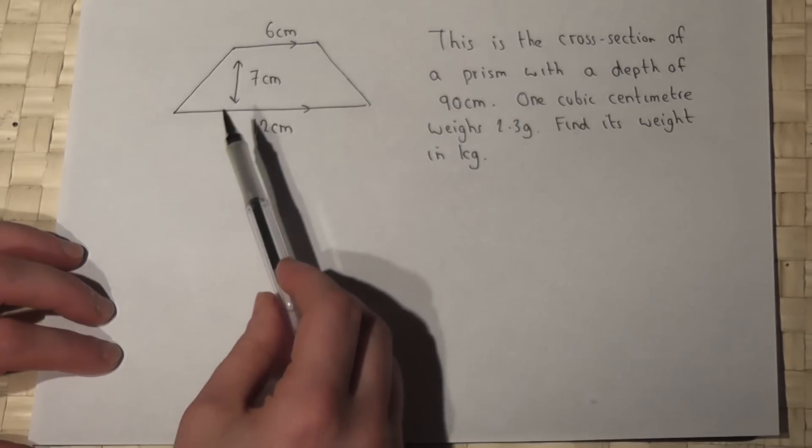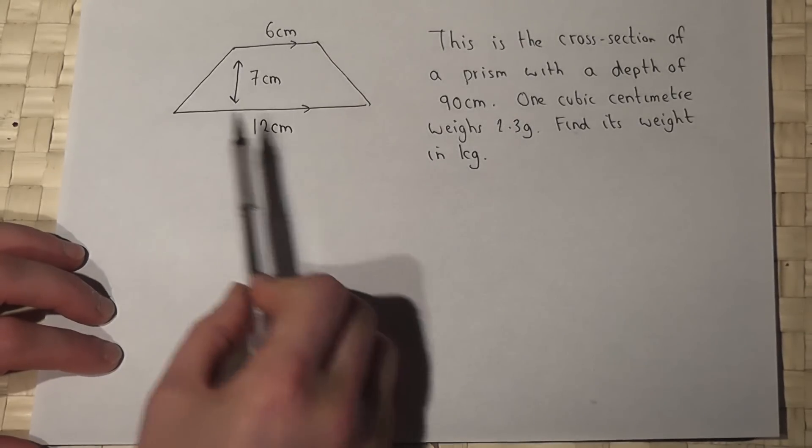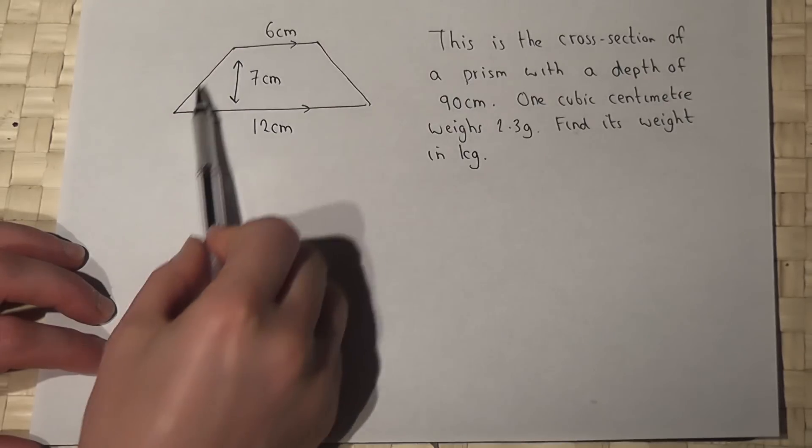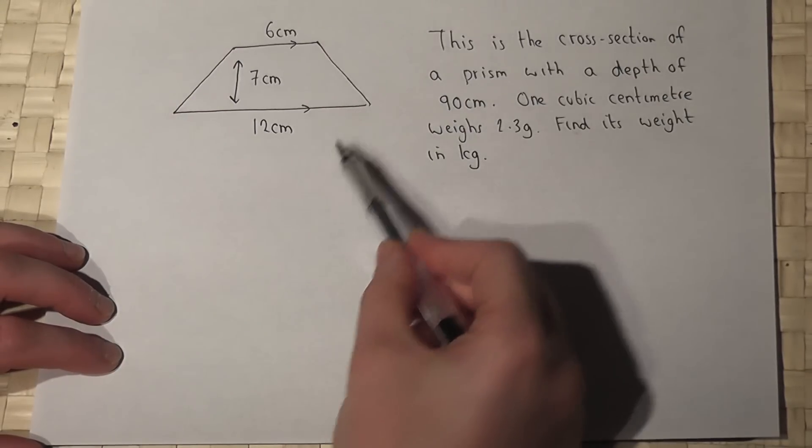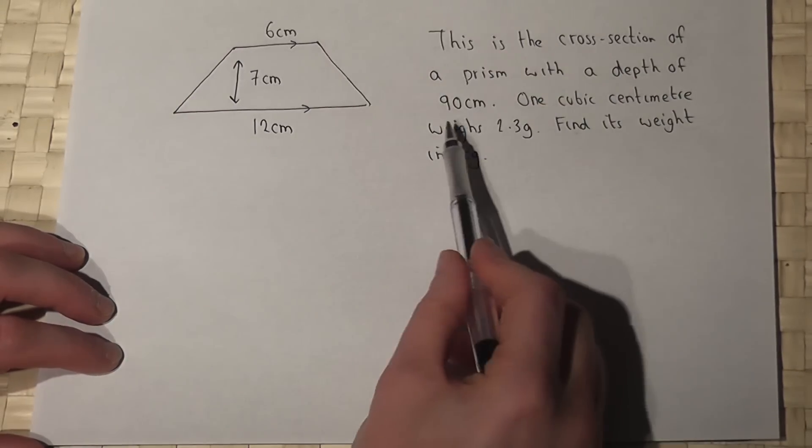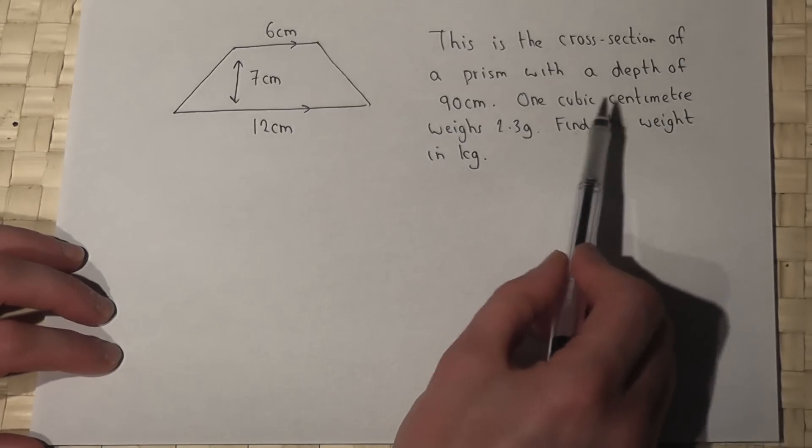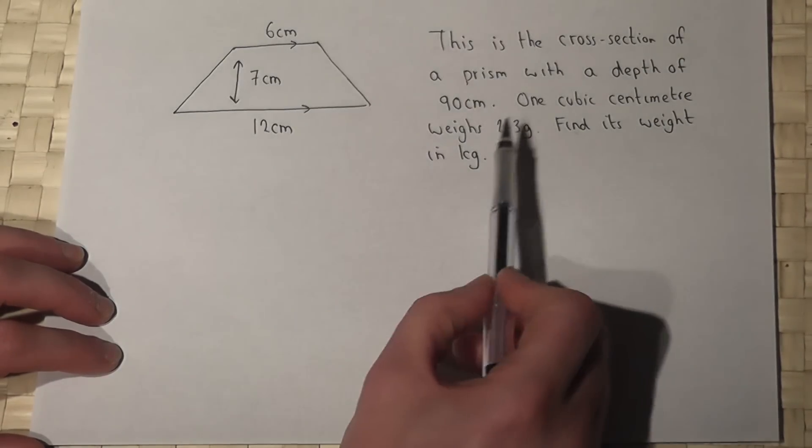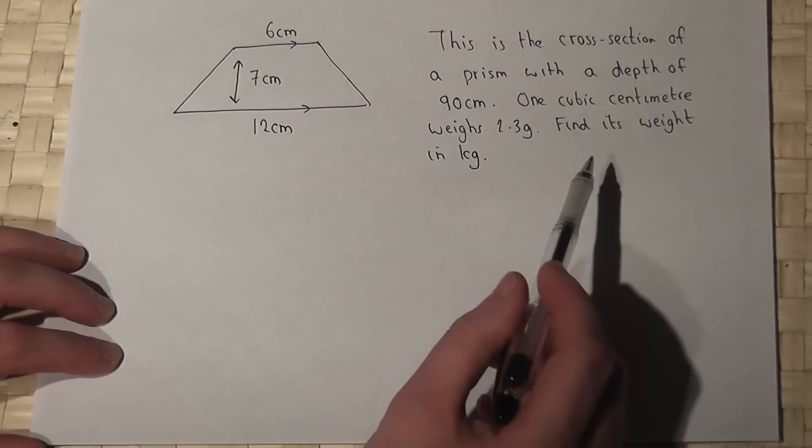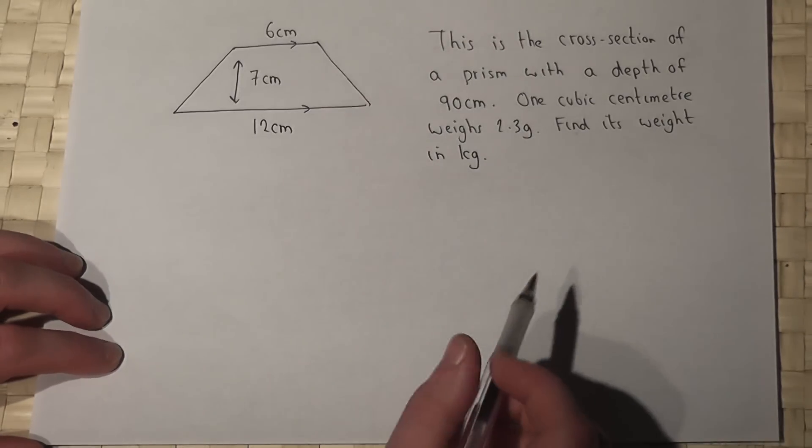This problem looks at a prism which has a trapezium as its face and it's got a depth of 90 centimeters. We're told that one cubic centimeter weighs 2.3 grams and we're asked to find this weight.